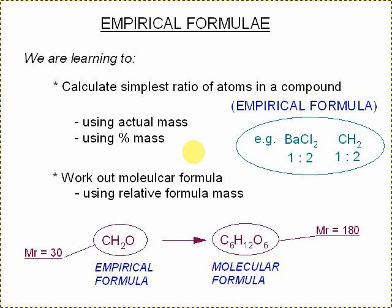Welcome to this tutorial, which is about empirical formula. We're learning to calculate the simplest ratio of atoms in a compound, and that is the empirical formula. For example, BaCl2, 1 to 2 ratio, or CH2, a 1 to 2 ratio of the carbon to hydrogen there.